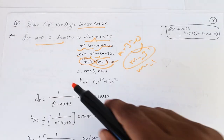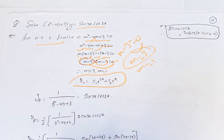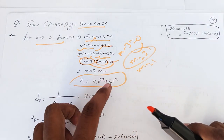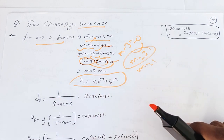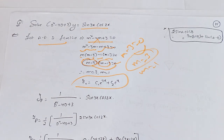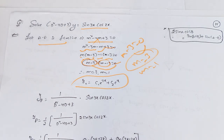So yc is equal to c1 e to the power 3x plus c2 e to the power x. This is the value of yc. Now we find yp.